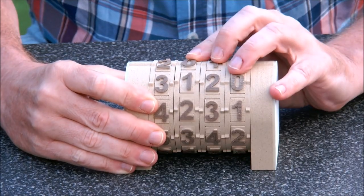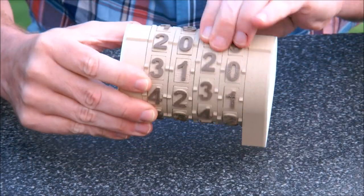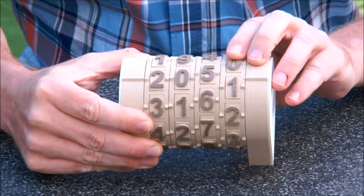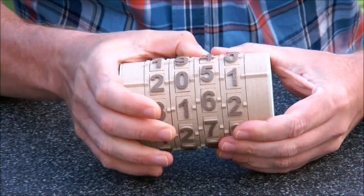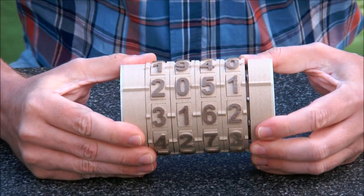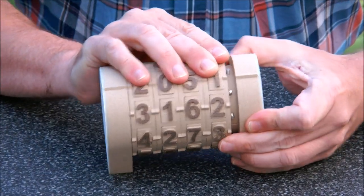2, 0, 5, 1. Let's align them carefully. Okay, here we have the code and let's pull. And there we are.